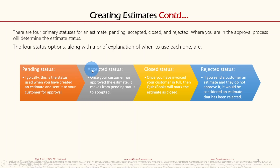Next is Accepted status — once your customer has approved the estimate, it moves from Pending to Accepted. After that is Closed status — once you have invoiced your customer in full, QuickBooks will mark the estimate as Closed as soon as you link it with the invoice and it's completed. Finally, Rejected status — if you send a customer an estimate and they do not approve it, it would be considered an estimate that has been rejected. These are the four different statuses for an estimate.